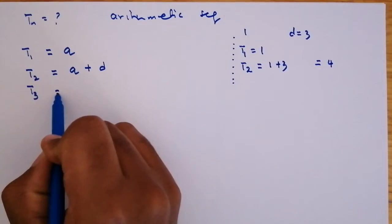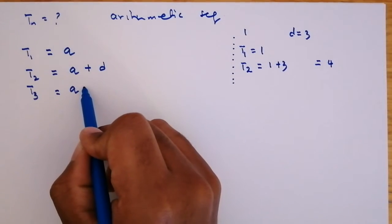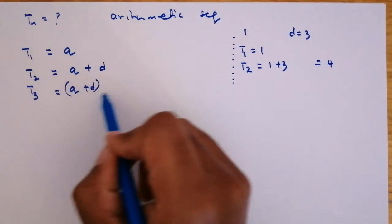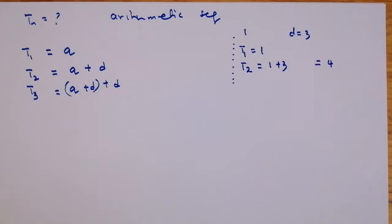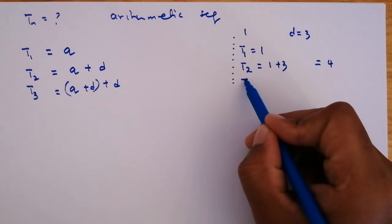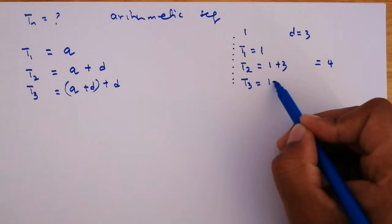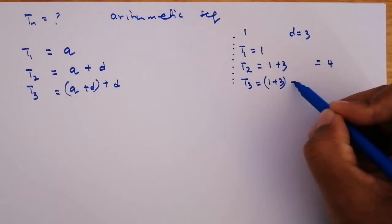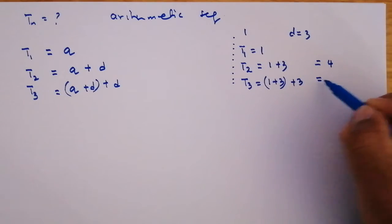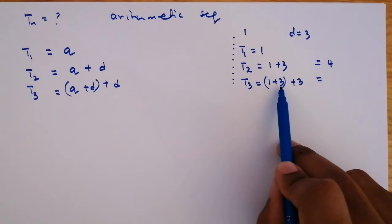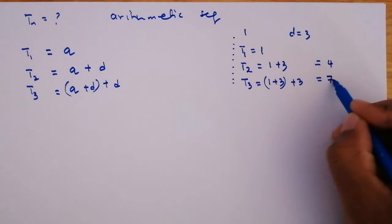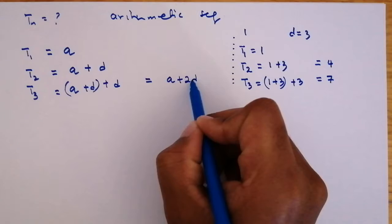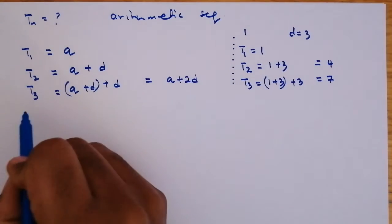To get T3, it's going to be 'a' — the first term — plus 'd', which gives the second term, and then plus another 'd'. The same applies here: T3 is 1 plus 3 (the second term) plus 3, giving us 4 plus 3 equals 7. So if we simplify, T3 equals a plus 2d.